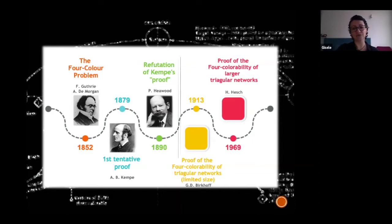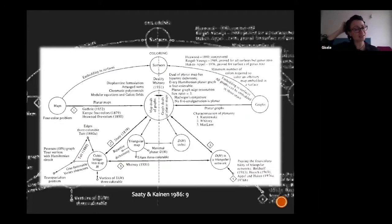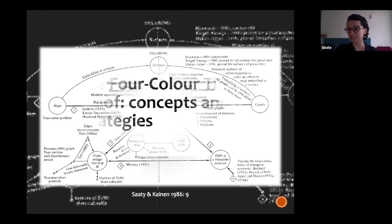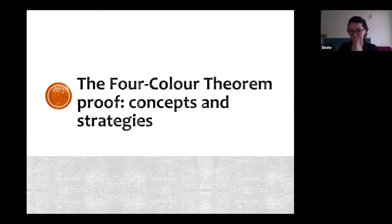The history is very complex. I always like to show this diagram from Saaty and Kainen's book about the four-color theorem, called 'Assaults and Conquests.' They present this diagram to show the logical organization of their book — here are some parts of mathematics involved in the solution of the problem. They say it's not possible to make a very faithful map of everything, because then they'd be talking about the entire history of graph theory, topology, and so on. I'm really just focusing on the main concepts and strategies of the proof.